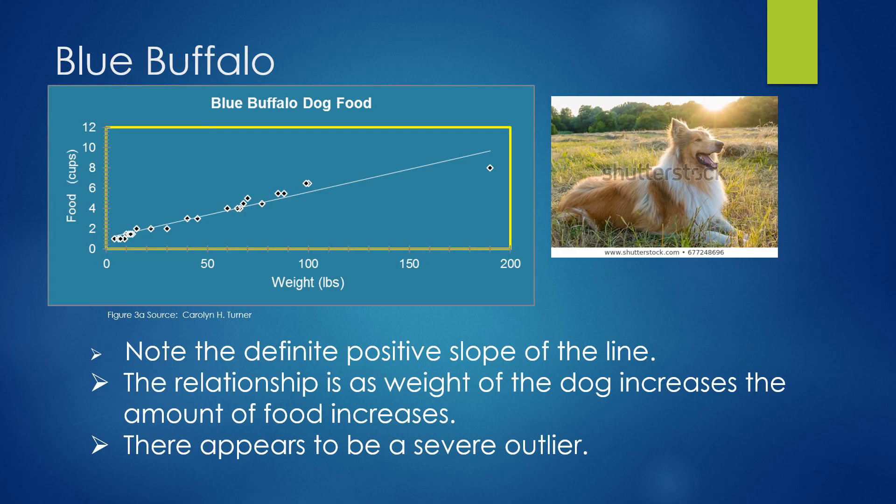In your first example, Blue Buffalo Dog Food wants to put on the package how much food to feed a dog based on its weight. Note there's a definite positive slope to the line. The relationship is that as the weight of the dog increases, the amount of food increases. There also appears to be a severe outlier. It turns out there was a 190-pound St. Bernard in the data, while most of the other dogs weighed between 4 pounds up to 100 pounds.